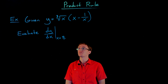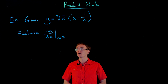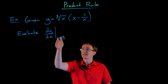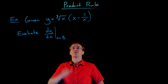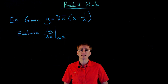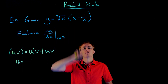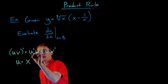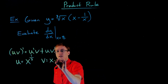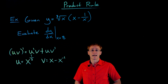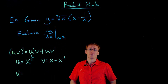Here's another product rule example. We're given the function y equal to the cube root of x times the quantity x minus 1 over x, and we're asked to evaluate dy/dx at x equals 8. Since the function is written as a product we'll use the product rule. We identify u as the cube root of x, written as x to the one-third to make differentiation easier, and v as x minus 1 over x, rewriting 1 over x as x to the negative 1.